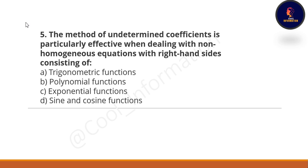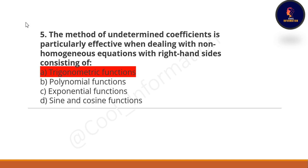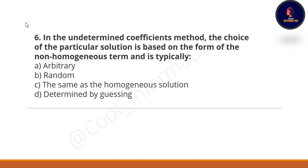Next question: the method of undetermined coefficients is particularly effective when dealing with non-homogeneous equations with a right hand side consisting of what? Options are trigonometric functions, polynomial functions, exponential functions, or sine and cosine functions. The correct option is option A — trigonometric functions.